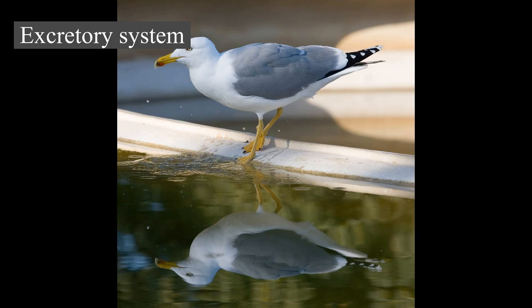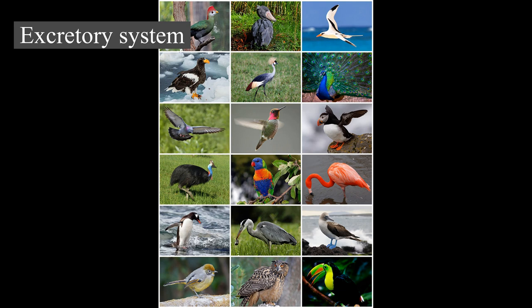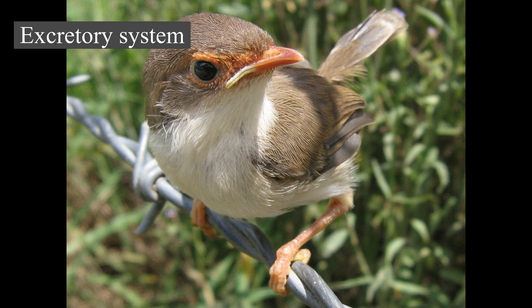The cloaca is a multi-purpose opening: waste is expelled through it, most birds mate by joining cloacas, and females lay eggs from it. In addition, many species of birds regurgitate pellets. It is a common feature of altricial passerine nestlings that instead of excreting directly into the nest, they produce a fecal sac — a mucus-covered pouch that allows parents to either dispose of the waste outside the nest or to recycle the waste through their own digestive system.